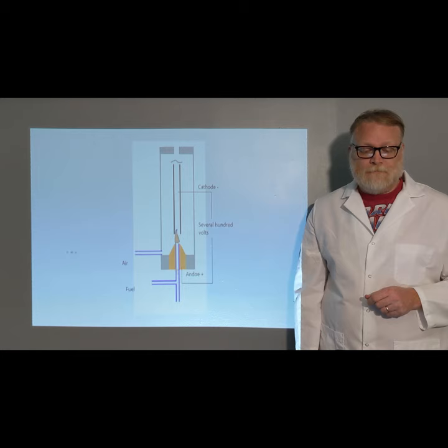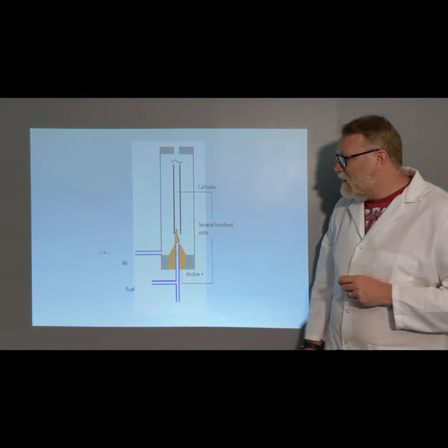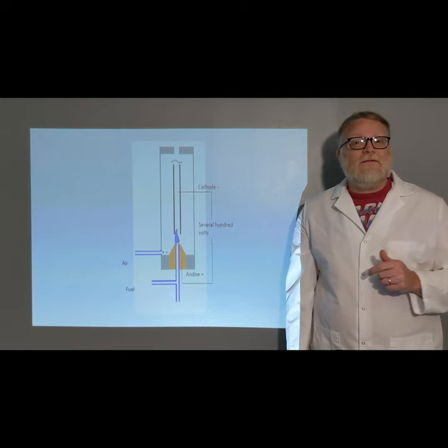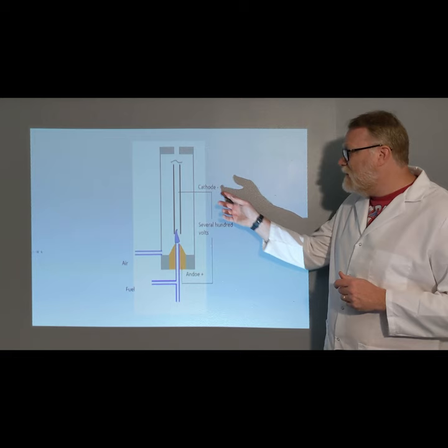The body of the jet is going to be our anode, and the electrode here is going to be our cathode. The difference between the two is several hundred volts for a potential difference. It doesn't really matter what that is. Just know that there is a potential difference there.